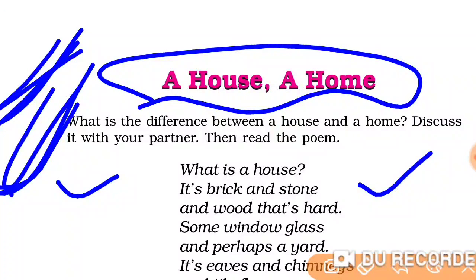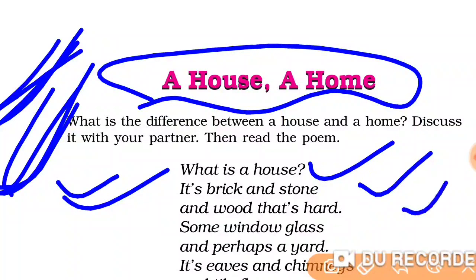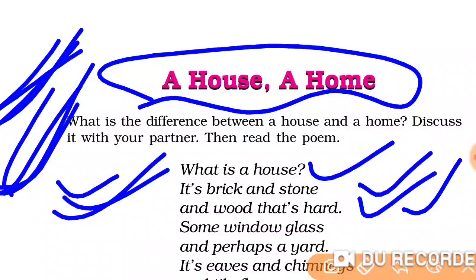Now we will read the poem line by line. What is a house? The very first line — the poet is asking a question: what is a house? The answer is: it is brick and stone and wood that is hard — these are the ingredients of a house. What are the ingredients of a building? It is brick, stone, and wood that is hard — you can touch them and feel that these things are very hard.